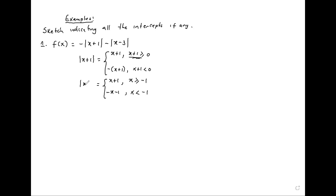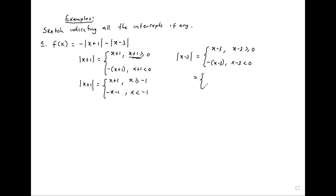Now for the modulus of x minus 3: it equals x minus 3 when x minus 3 is greater or equal to 0, and negative x minus 3 when x minus 3 is less than 0. So the modulus of x minus 3 equals x minus 3 if x is greater or equal to 3, and negative x plus 3 if x is less than 3.